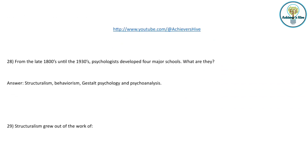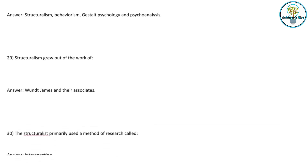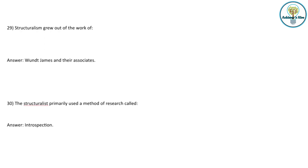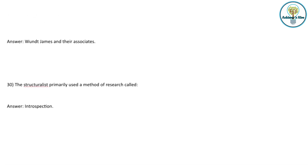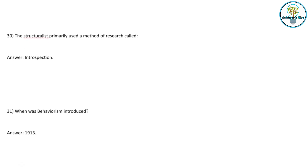From the late 1800s until the 1930s, psychologists developed four major schools: structuralism, behaviorism, Gestalt psychology, and psychoanalysis. Structuralism grew out of the work of Wilhelm Wundt and associates. The structuralists primarily used a method of research called introspection.